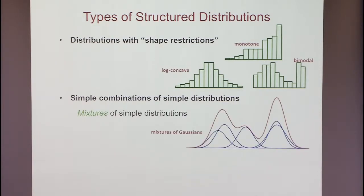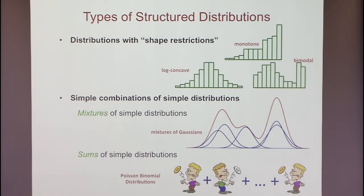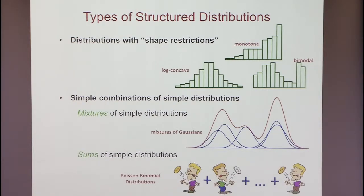For example, you can take Gaussians and combine them by taking a mixture, or take Bernoulli random variables and just take their convolution. Naturally, one would think you need different techniques to learn every single distribution in each class. But I'm going to argue there's a very simple method that works for all of them — a single algorithm where you only change the input parameters, and it gives you sample-optimal or nearly sample-optimal (up to logarithms) and computationally efficient algorithms for each and every one of them.